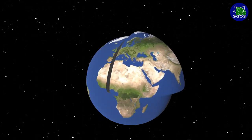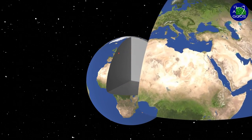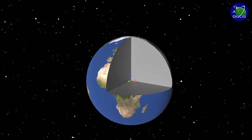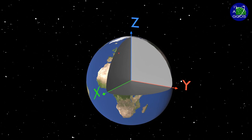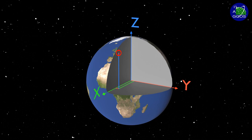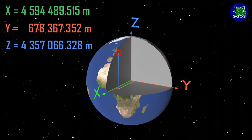The intersection of these three axes coincides with the center of the Earth, with the X and Y axes pointing to the equator, and the Z axis oriented toward the North Pole. This framework allows us to communicate the location of any point or object, be it on the Earth's surface or in near space, with three values called coordinates, each representing a place on one of the three axes.